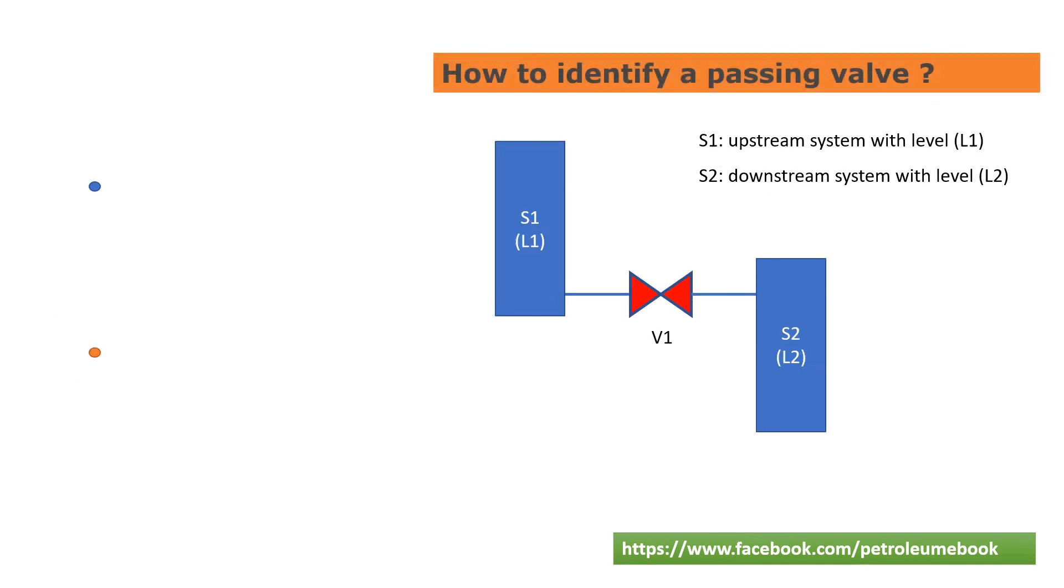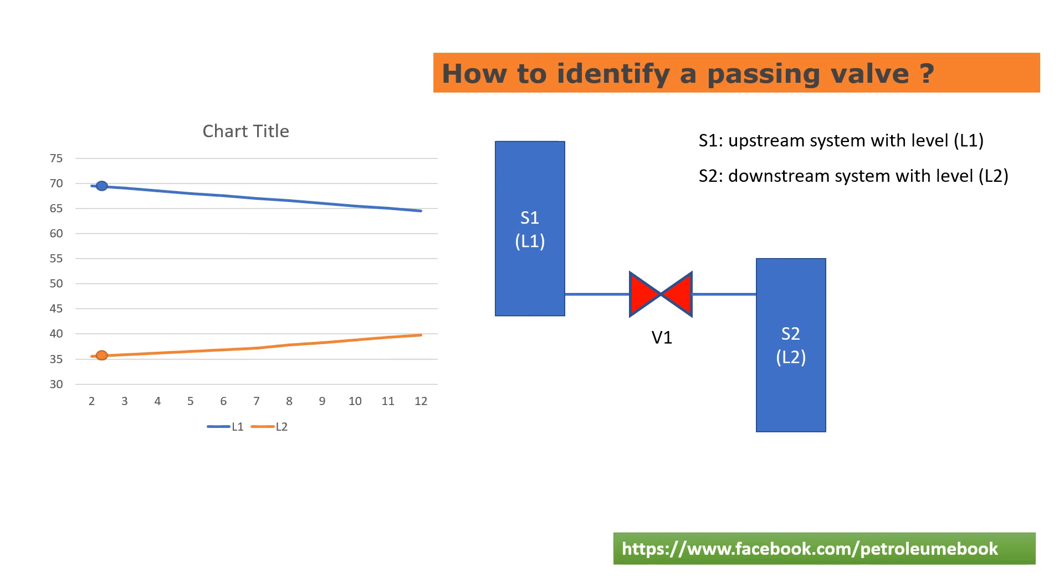The next example is with two isolated systems S1 and S2 with levels L1 and L2. After we fully close V1, if the level L1 still decreases and level L2 still increases, we can conclude that valve V1 is passing.